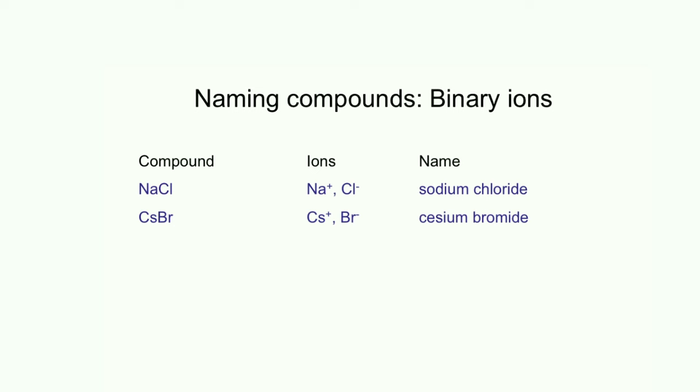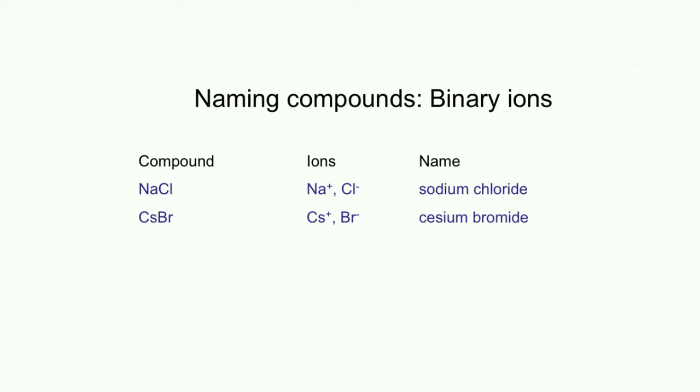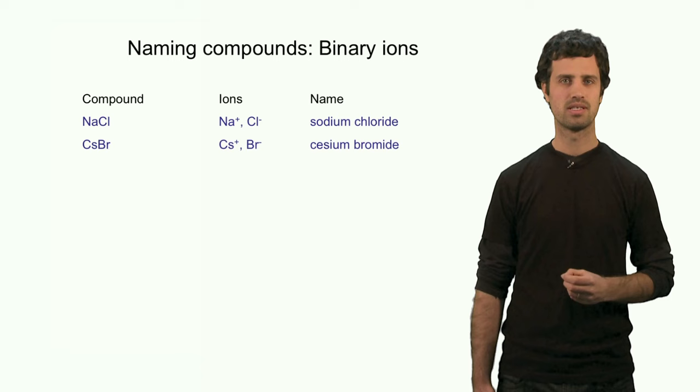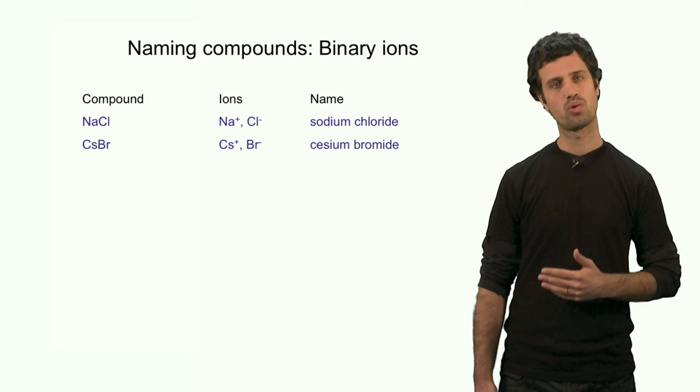Cesium bromide is another example, composed of cesium plus cations and bromine minus anions. Now, in order to name these binary ionic compounds properly, we have to specify whether or not the first element, the cation, is of Type 1 or of Type 2.